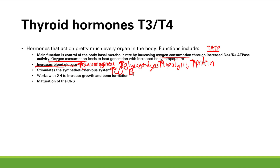Thyroid hormone is essential for normal CNS maturation during the perinatal period — around the time the baby is born. If you have low thyroid levels, hypothyroidism in the baby at this point, you can have disrupted CNS maturation leading to permanent mental retardation. To recap: main function is control of basal metabolic rate, supported by increased glucose and oxygen delivery, plus growth and CNS maturation.